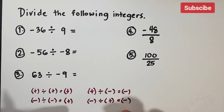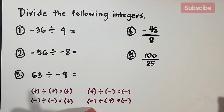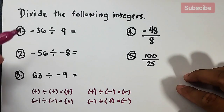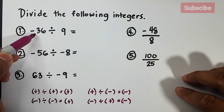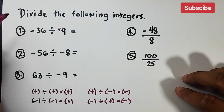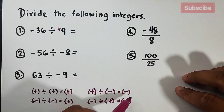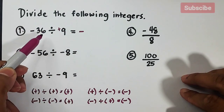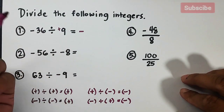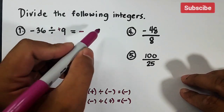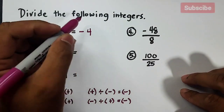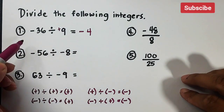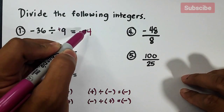Two same-sign integers divided together give a positive quotient; two different-sign integers give a negative quotient. Let's start with number one: negative 36 divided by nine. Here, 36 is negative and nine is positive — they have different signs, so the quotient must be negative. 36 divided by nine equals four, so the answer for number one is negative four.